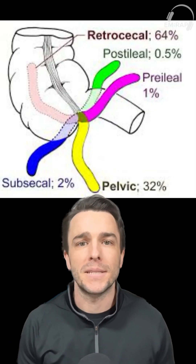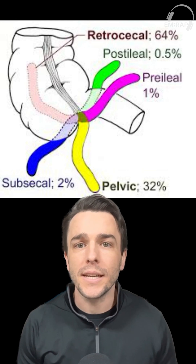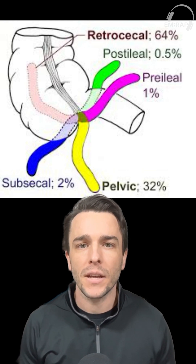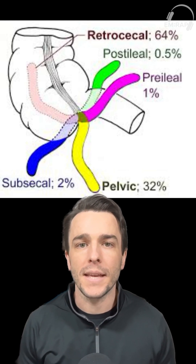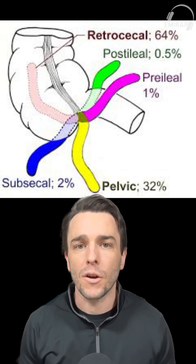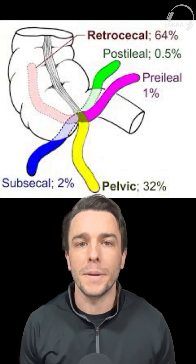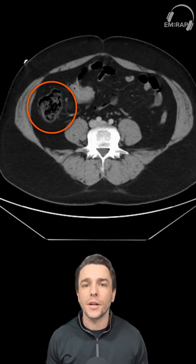It can be positioned retrocecally, pelvic, or pre or post ileal within the abdomen. The majority of the time it will be retrocecal. Now everyone has difficulty finding the appendix, but let's talk about the place to start your search.